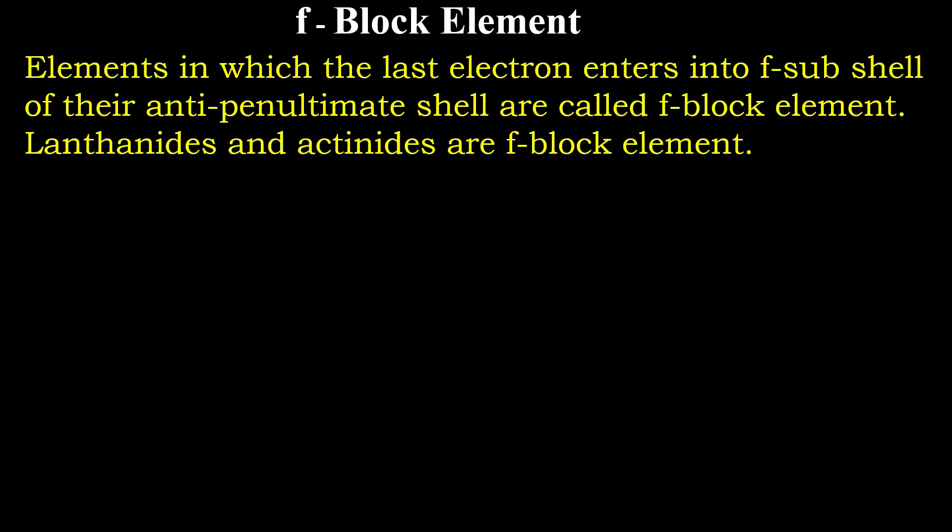Lanthanides and actinides are F block element. I want to elaborate it with the help of atomic structure. There are two parts in the atom. One is nucleus in which proton and neutron are packed. And it is surrounded by different orbits.